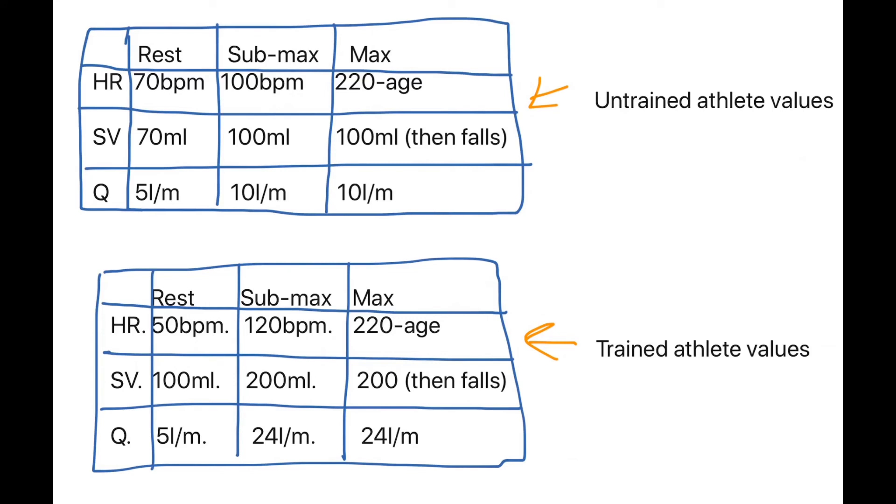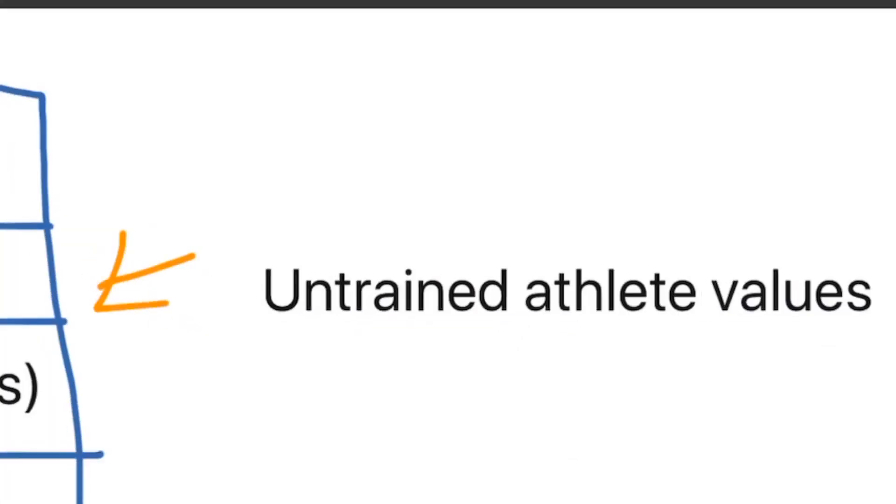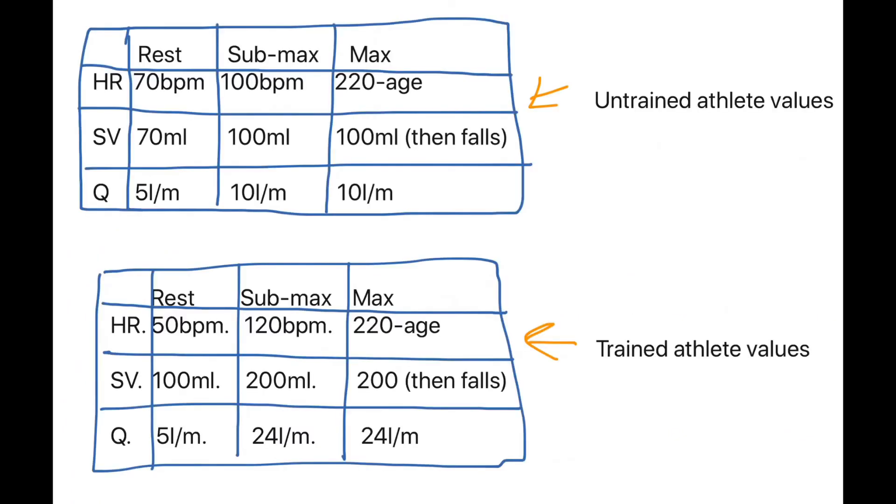I've got one more table for you to learn. We all looked at the rest values of both a trained athlete and an untrained athlete. What I've done now is I've just extended that table with the additional values that you need to know. So please right now pause the video, make a note of this table and get it onto your flashcards to learn.